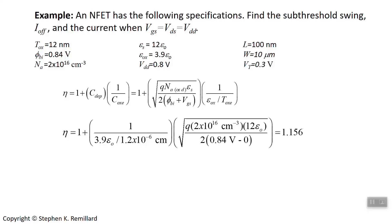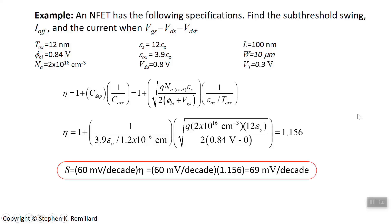This will help us to quickly estimate the sub-threshold swing just from the 60 times eta expression. So the sub-threshold swing is 60 times eta or 69 millivolts per decade per decade of current. Generally speaking sub-threshold swings are less than 100 so 69 is a lot closer to the theoretical minimum of 60 than it is to 100 so as far as I know that's considered to be a decent sub-threshold swing.